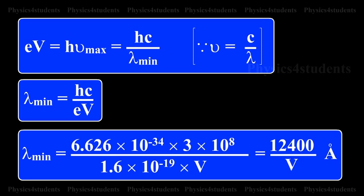Where h is Planck's constant, c is the velocity of light and e the charge of electron. Substituting the known values in the above equation, lambda minimum is equal to 6.626 times 10 raised to minus 34 times 3 times 10 raised to 8, the whole divided by 1.6 times 10 raised to minus 19 times V. That is equal to 12400 divided by V angstrom.